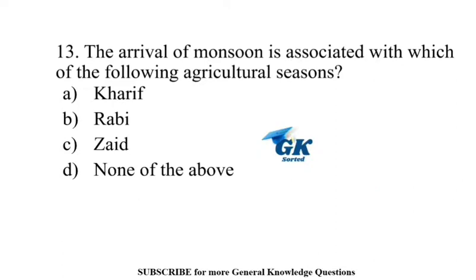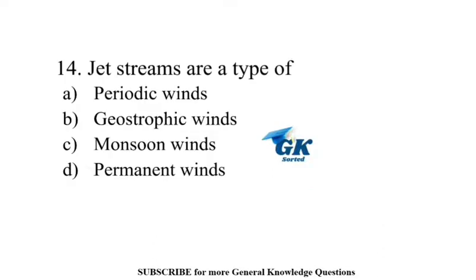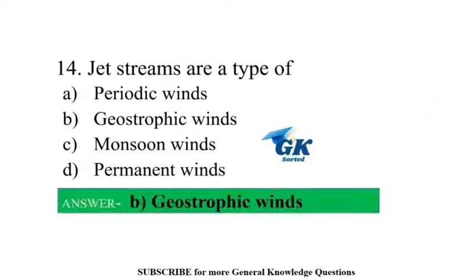The arrival of monsoon is associated with which of the following agricultural seasons? Kharif. Jet streams are a type of geostrophic winds.